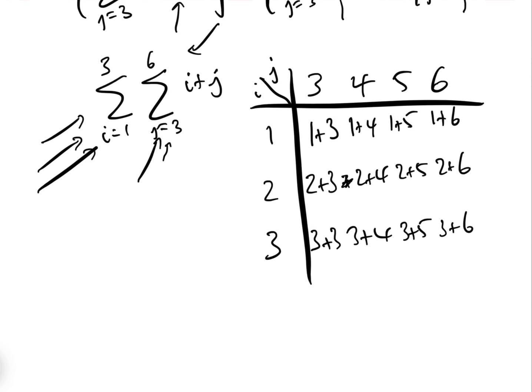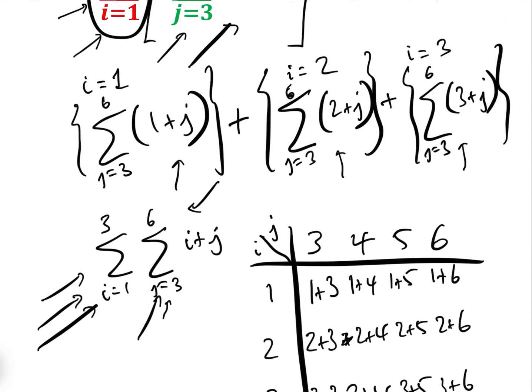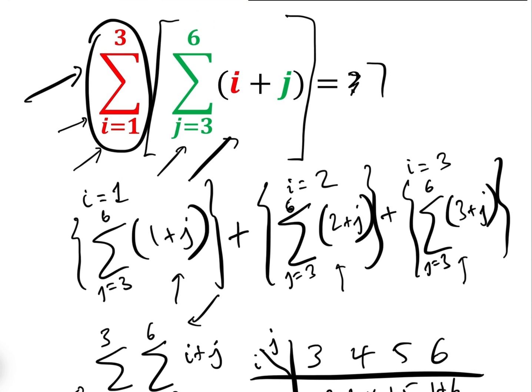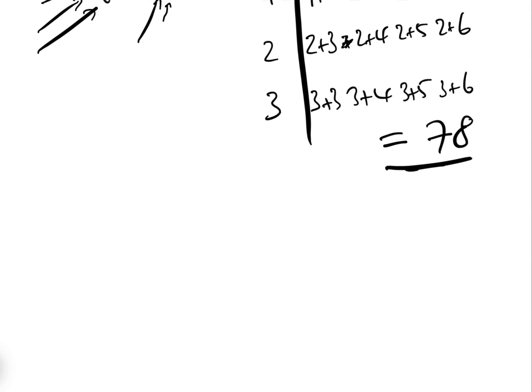When we add all of this up, that's four plus five plus six plus seven, plus five plus six plus seven plus eight, plus six plus seven plus eight plus nine, and the whole lot comes to 78. So the sum is 78. Well done if you got that right.